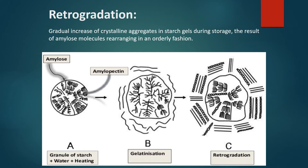Retrogradation is the gradual increase of crystalline aggregates in starch gel during storage. It is the result of amylose molecules rearranging in an orderly fashion. During gelatinization, amylose and amylopectin are exposed to water and heat, forming an orderly alignment. Over a period of time, amylose has a tendency to re-organize itself and produce crystalline aggregates, causing the gel to form in an orderly manner. This is known as retrogradation.